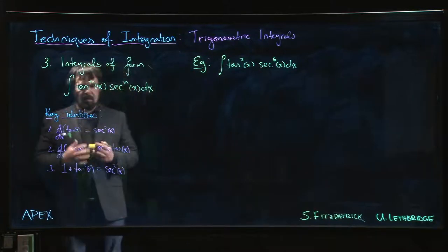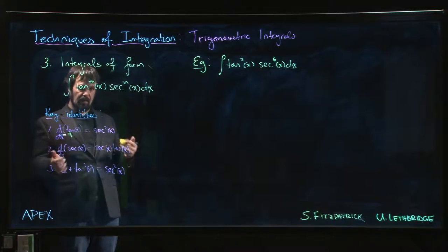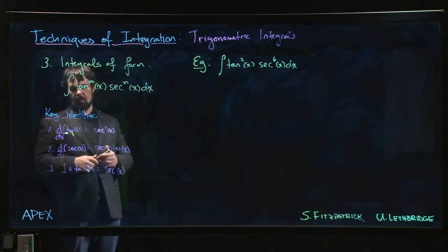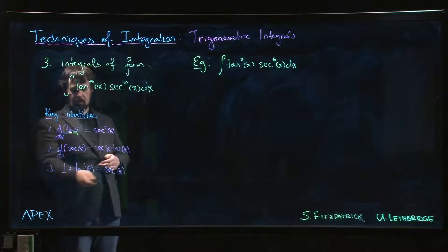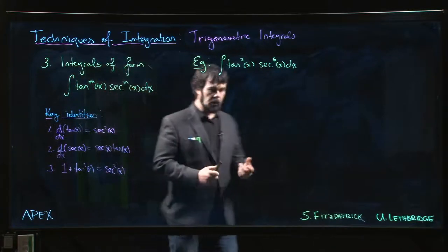So with sine and cosine, we essentially rely on Pythagorean identity and half angle, these power reduction formulas. We still have, of course, a Pythagorean identity. We don't have those same nice power reduction formulas.